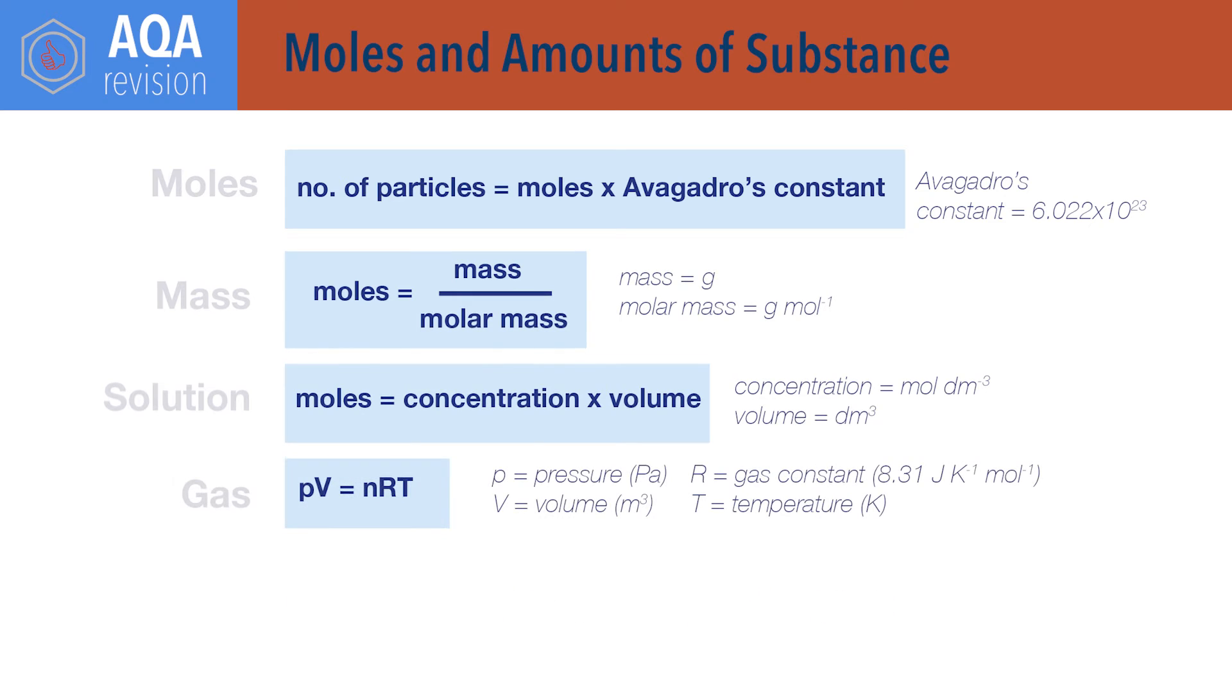PV equals nRT. This is the ideal gas equation, where P equals pressure in pascals, V equals volume in metres cubed, N equals number of moles, R is the universal gas constant, 8.31 joules per kelvin per mole, and T is temperature in Kelvin.